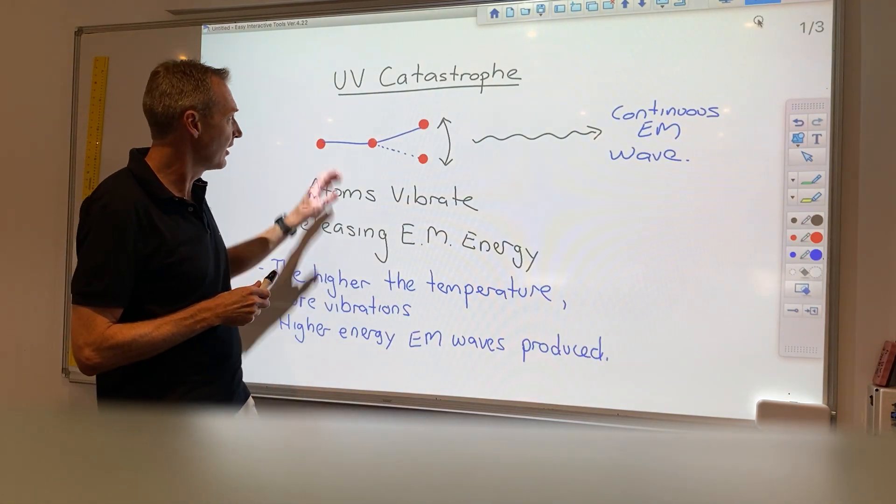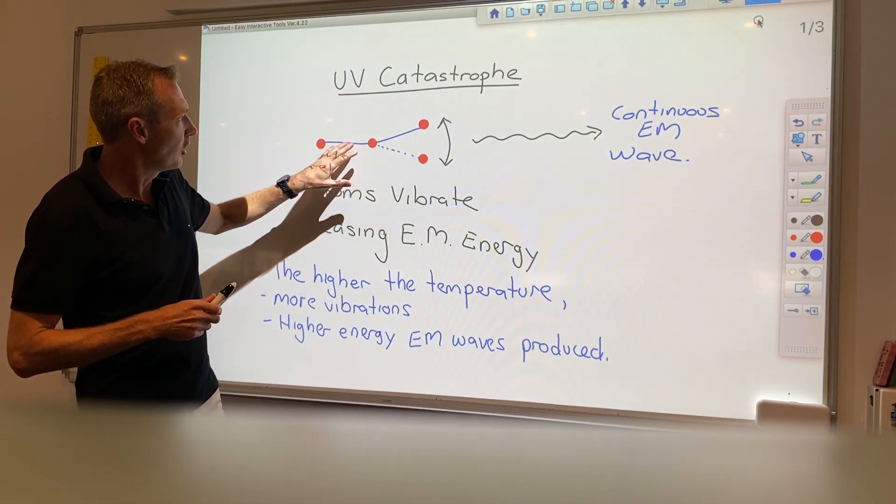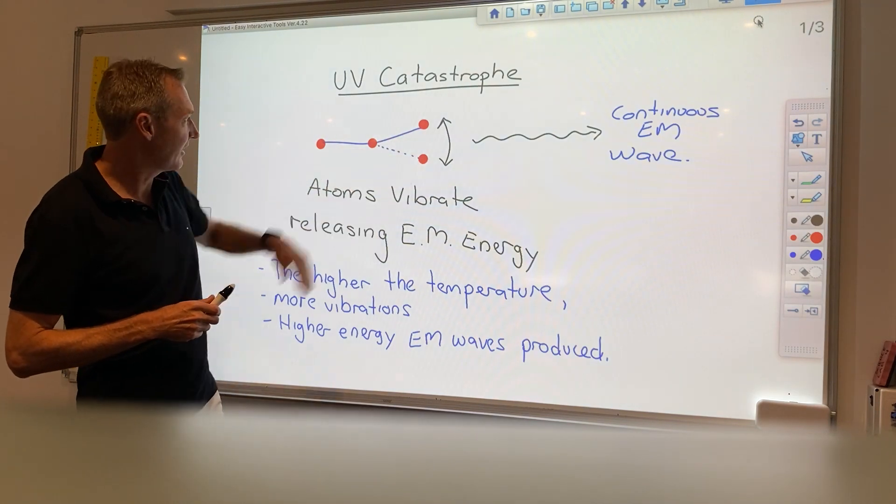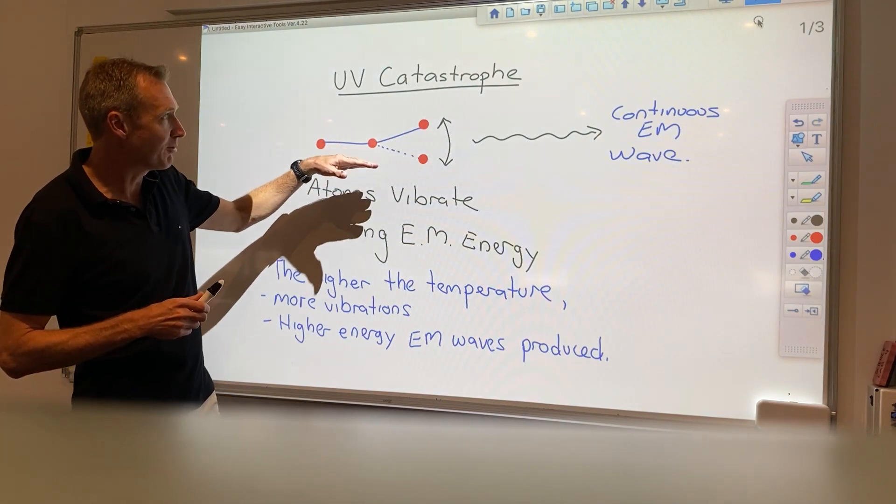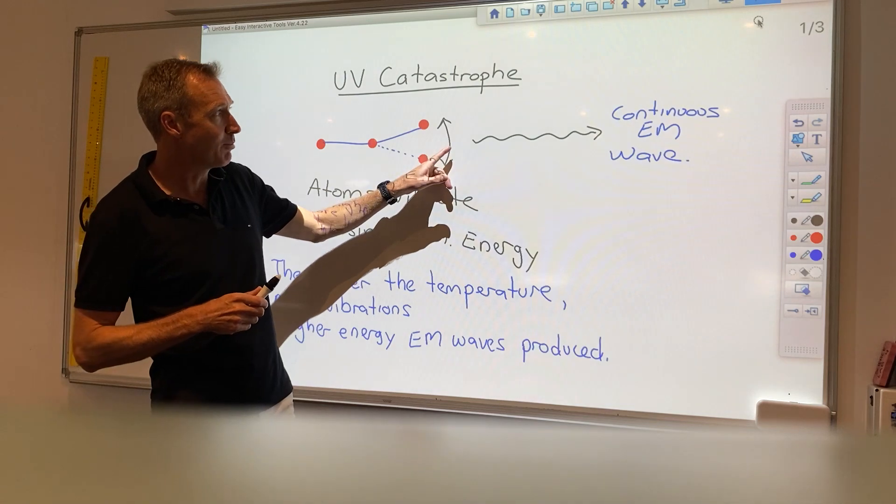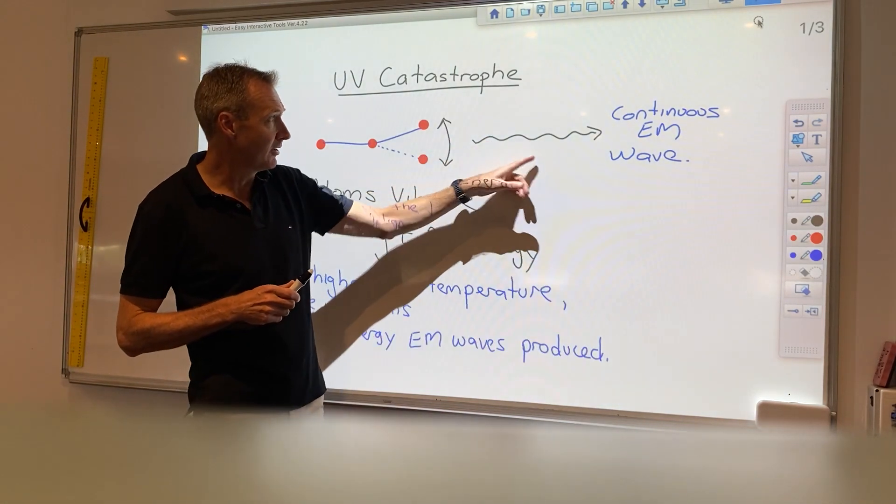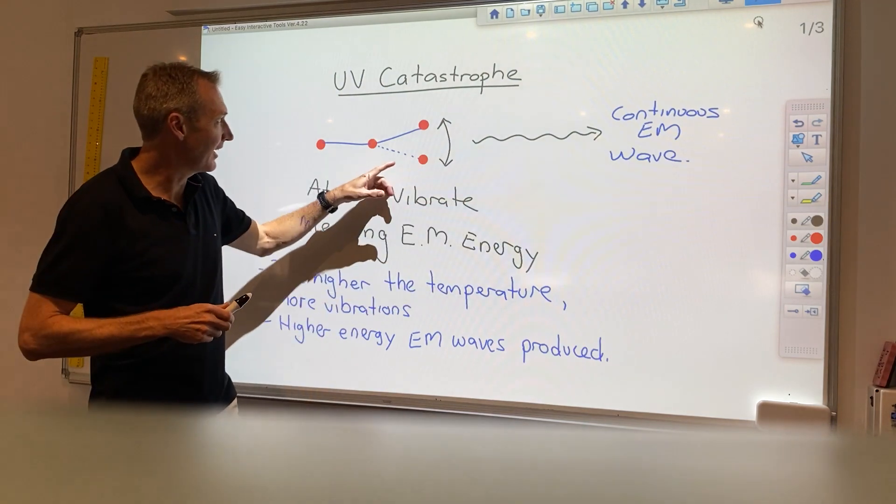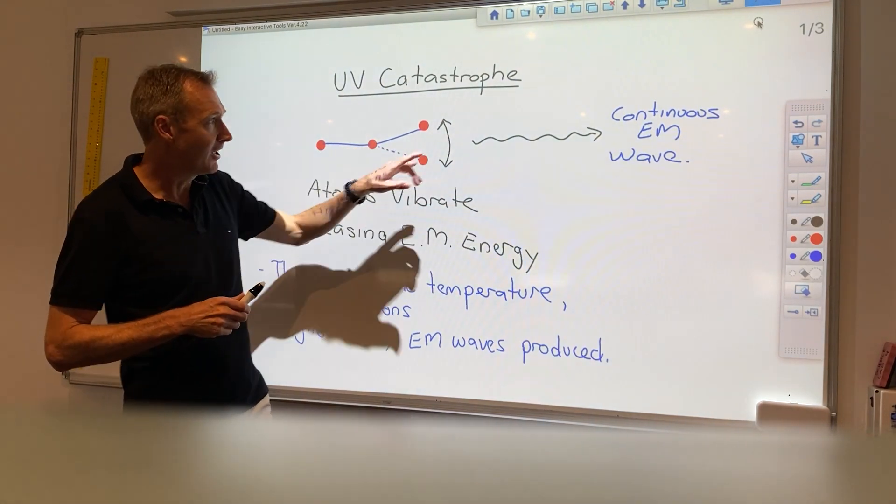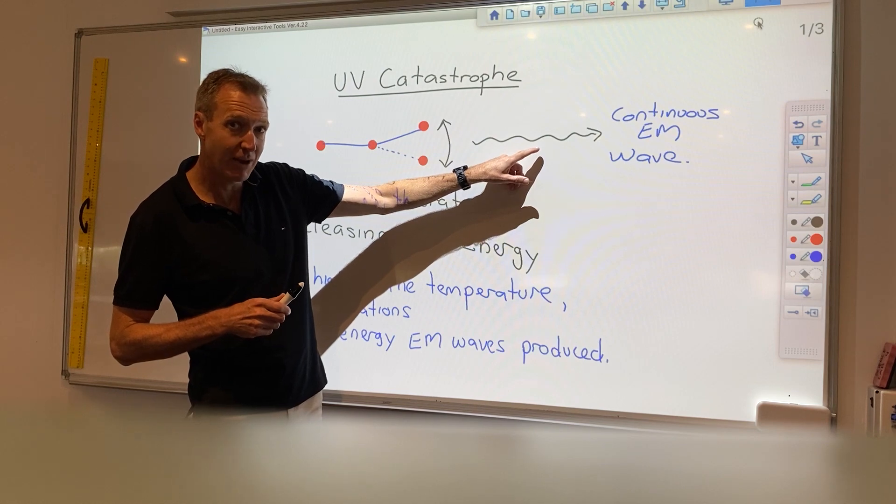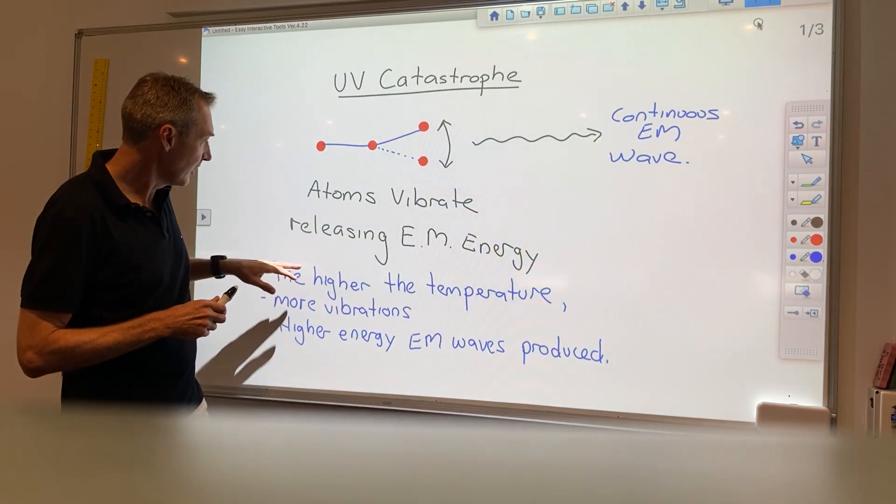With the UV catastrophe, they originally looked at atoms vibrating. When they vibrate, you get this continuous EM wave being pushed out, which meant that the more it vibrated, the higher the energy electromagnetic wave. So basically, as you increase the temperature, the more vibrations, and you get a higher electromagnetic wave produced.